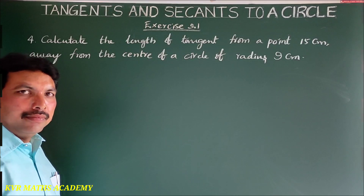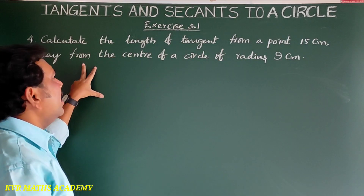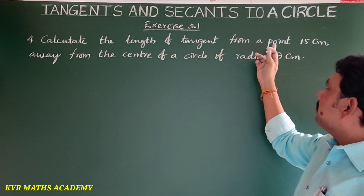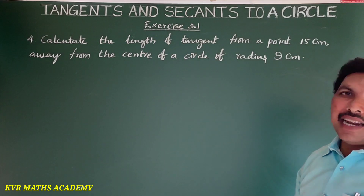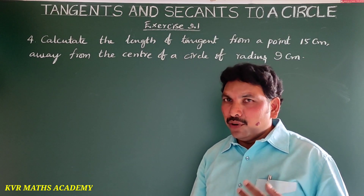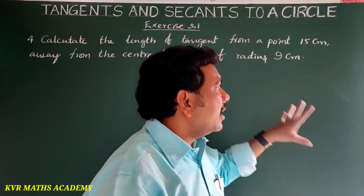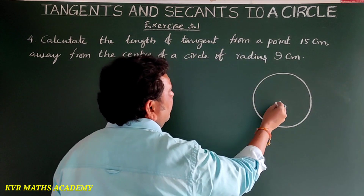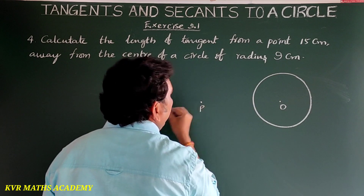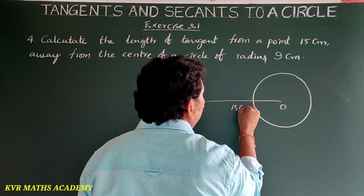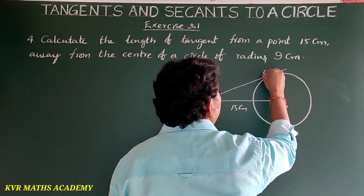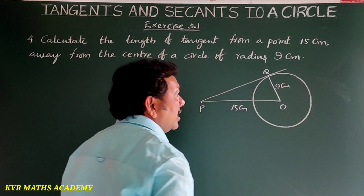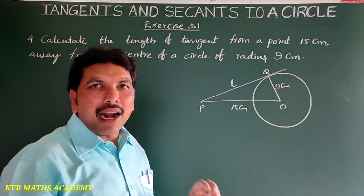Fourth question: calculate the length of tangent from a point 15 centimeters away from the center of a circle of radius 9 centimeters. Draw the diagram: O is the center, P is the external point, the distance PO is 15 centimeters, PQ is the tangent, Q is the point of contact, and OQ is the radius equal to 9 centimeters. Find the length of the tangent PQ.